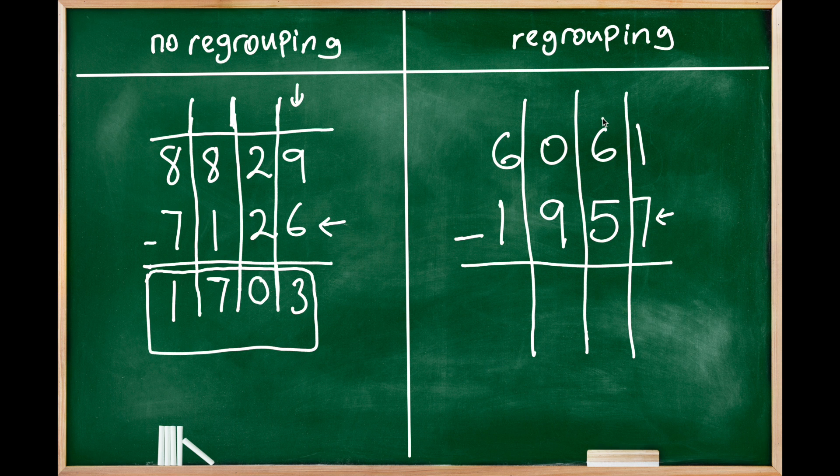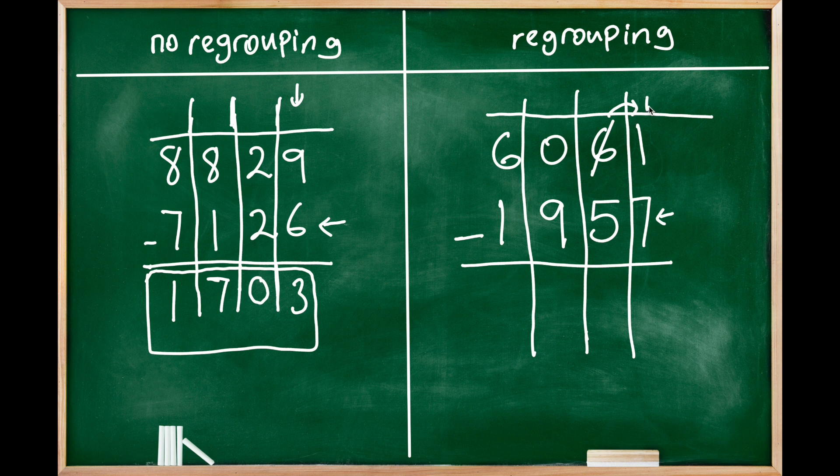We cannot take away 7 from 1. So what do we do? We transfer, we borrow, we go to our neighbor, we ask them. We need one ten. So you have 6 of them, so if we borrow one ten, then ten will be moved here, and then this right here will be 5. We will have 5 tens left here.